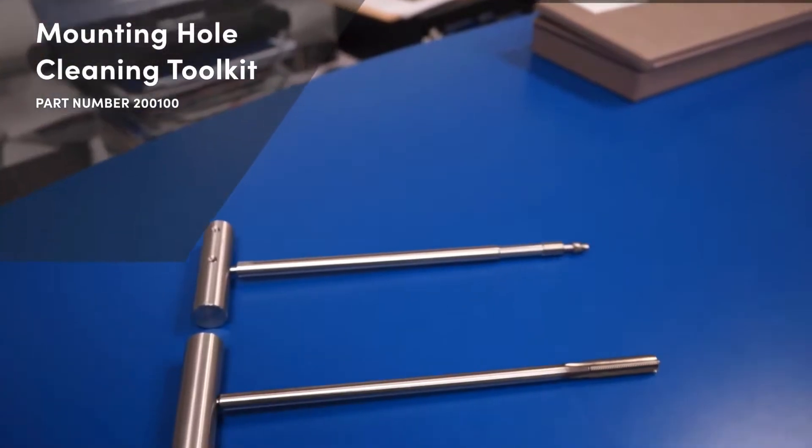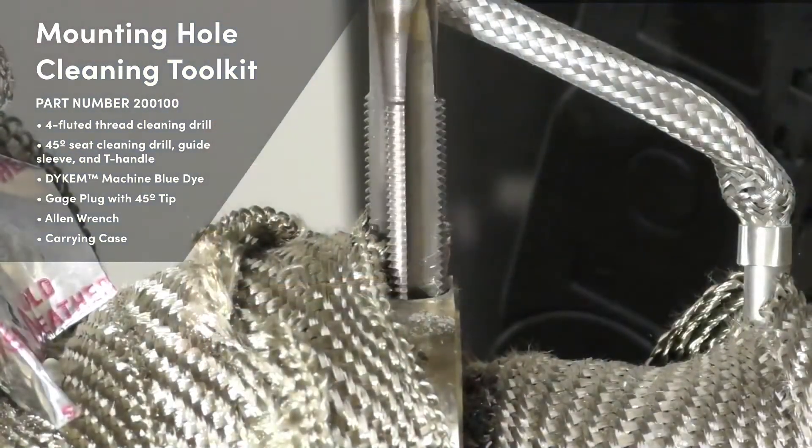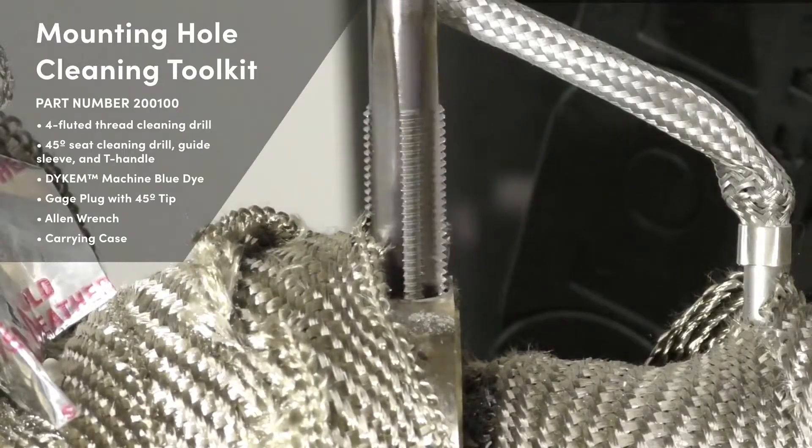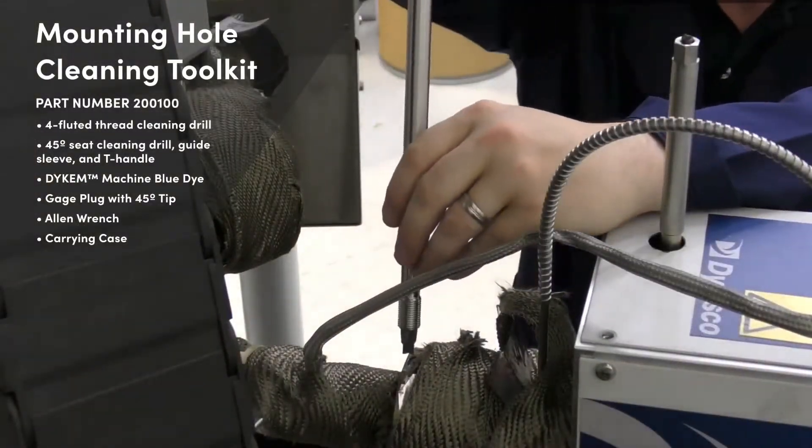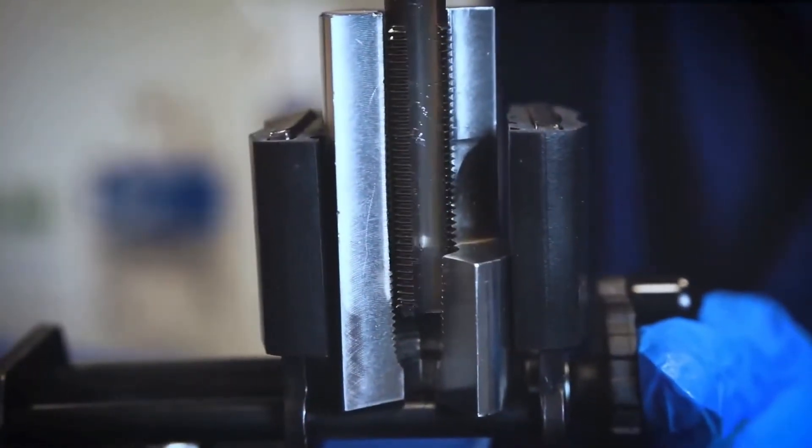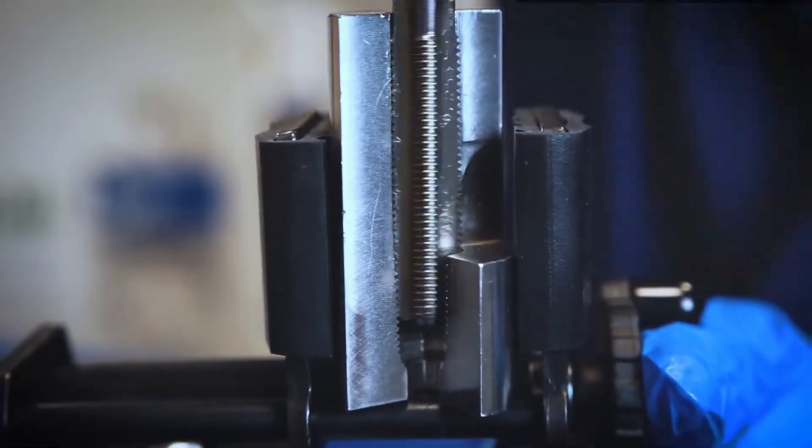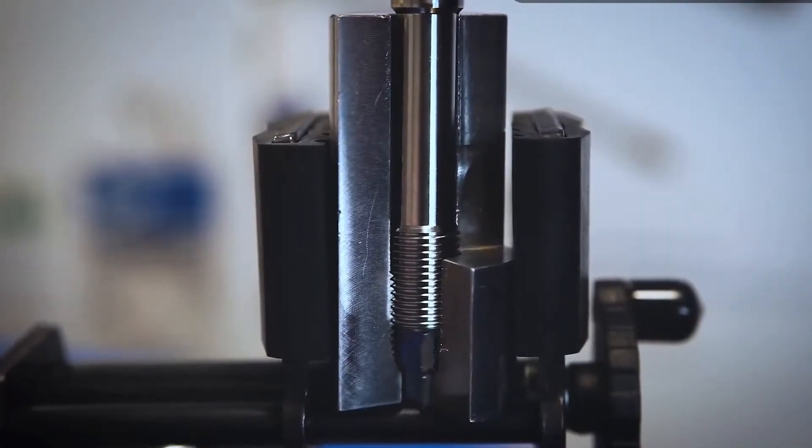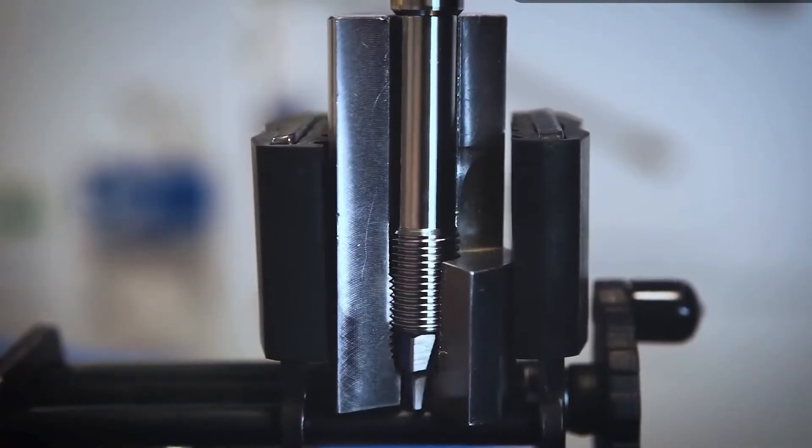The kit consists of a four fluted cleaning drill for cleaning the 1.5-20 UNF threads and then a special tool for cleaning the 45-degree seat. The technician will manually spin both tools into the threads of the mounting hole to remove polymer residue and other materials.